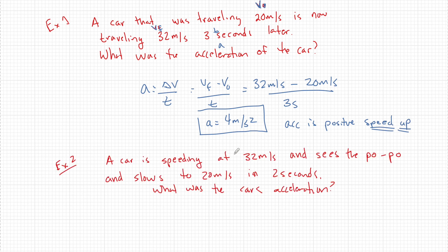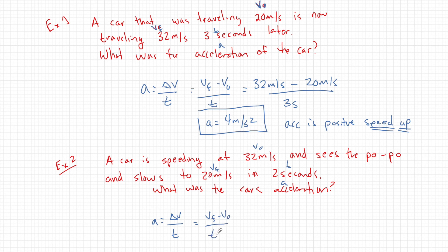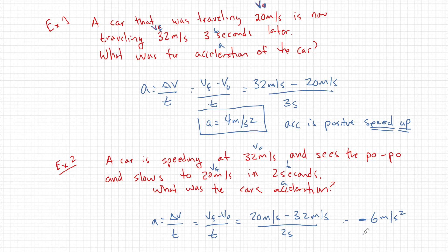Example two: a car speeding at 32 meters per second sees the police and slows down to 20 meters per second in two seconds. What is the acceleration? Initial velocity is 32 m/s, final velocity is 20 m/s, time is 2 seconds. Always write the formula: A equals delta V over t, which equals V-final minus V-initial over t. Students always say 'when you do it I get it, but when I do it I don't' — that's because they skip steps and don't put in units. So: 20 minus 32 meters per second divided by 2 seconds gives us negative 6 meters per second squared — this car slowed down.